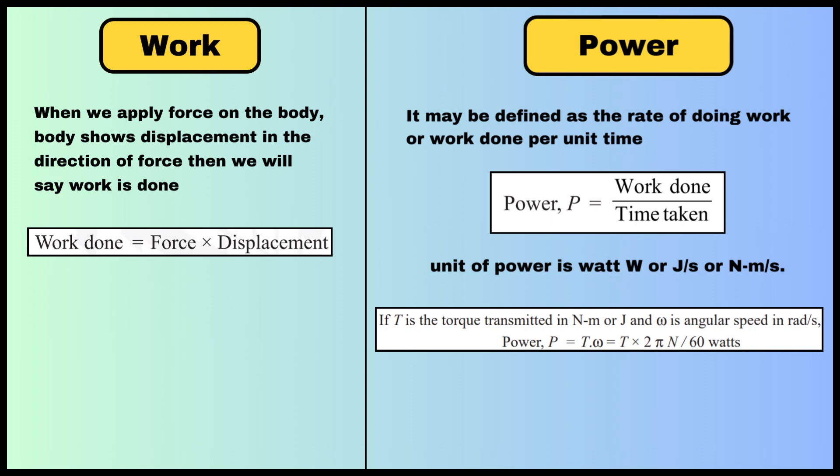The next term is power. Power is the rate of doing work, or work done per unit time — it tells us how quickly we are doing work. The unit of power is the watt, or joule per second, or newton-meter per second. Power can also be written in terms of torque and angular speed as Power = Torque × Angular velocity.